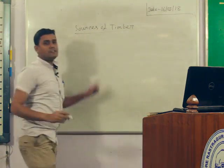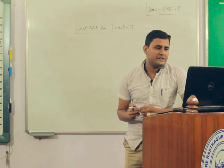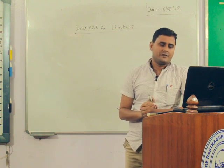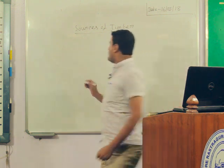What are the sources of timber? Various genera and species of gymnosperms are used as the main source of timber. Such genera are Pinus, Cedrus, Abies, Agathis, Araucaria, Cupressus, and Juniperus.